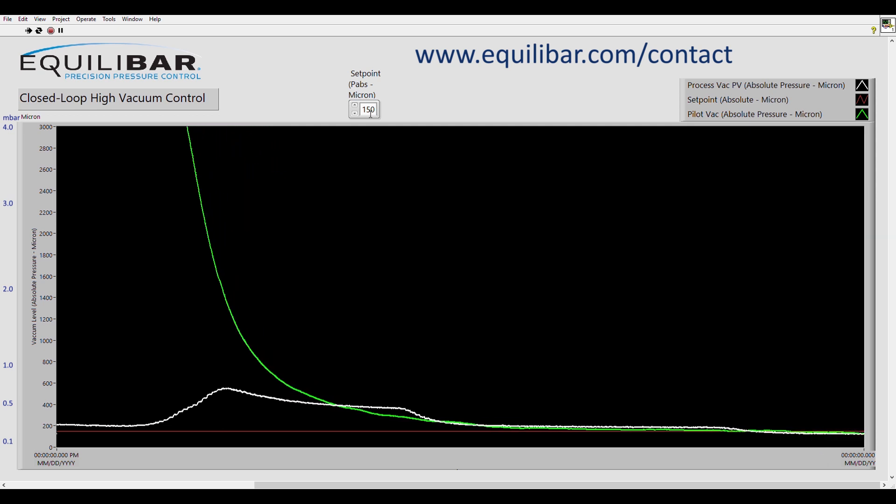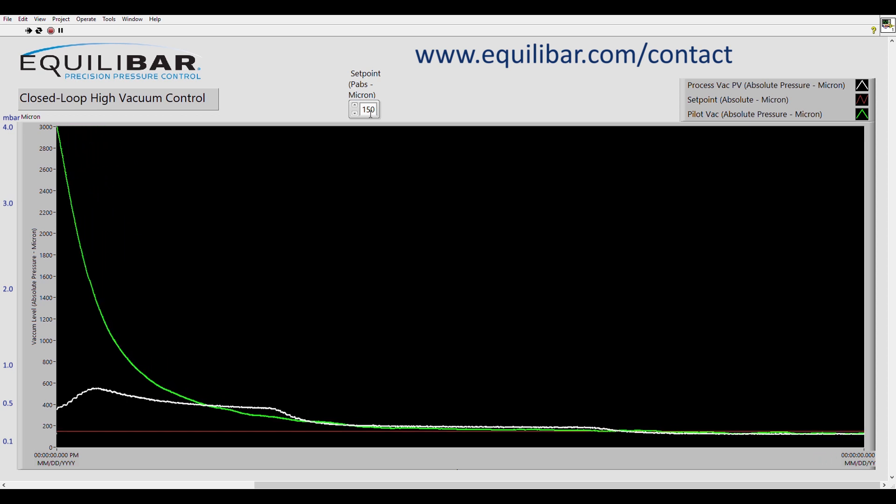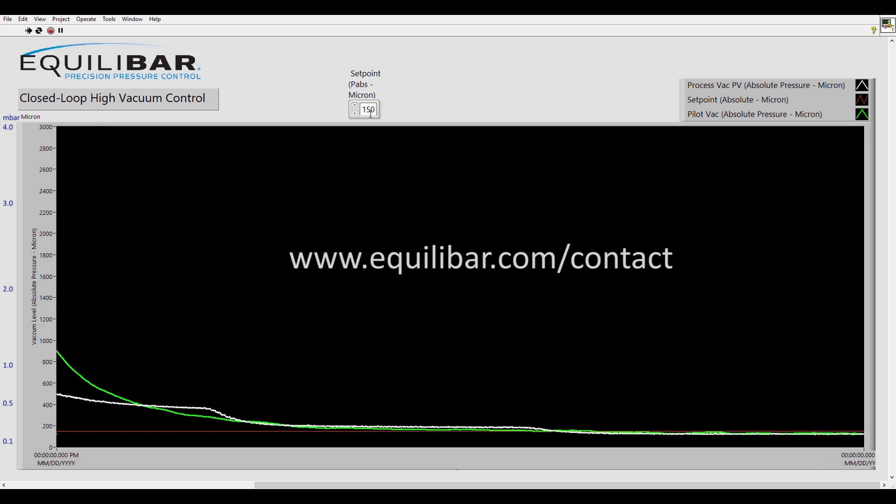This closed loop control is capable of going to even lower absolute pressures limited by the capacity of your given pump. For more information or to discuss your vacuum automation application, contact us at equilibar.com.